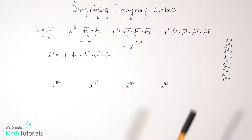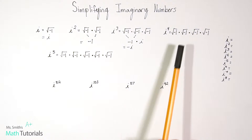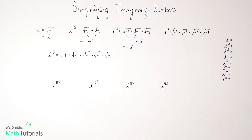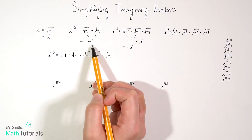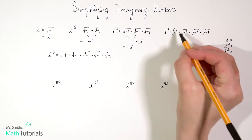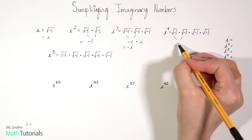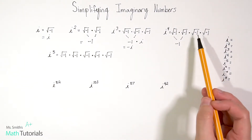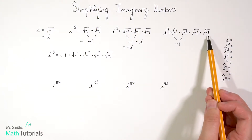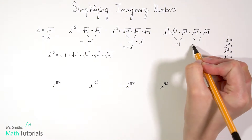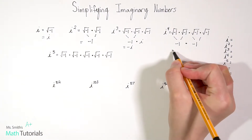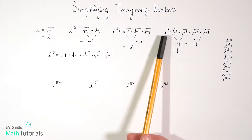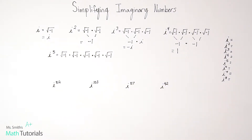Let's apply the same reasoning to i to the fourth power. We have the square root of negative one multiplied four times. We can reduce the first pair: the square root of negative one times the square root of negative one is negative one. And we have another pair: the square root of negative one times the square root of negative one is also negative one. So we've got negative one times negative one, which is just one. i to the fourth power reduces to positive one.